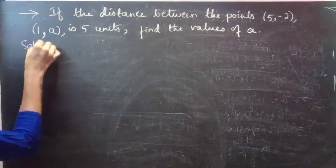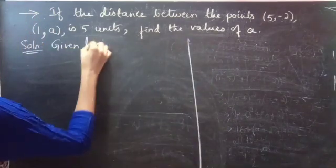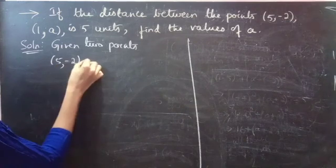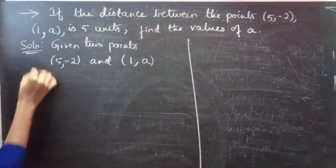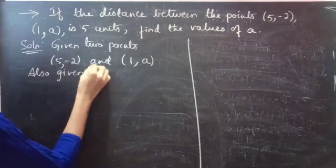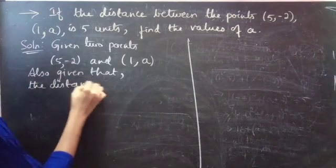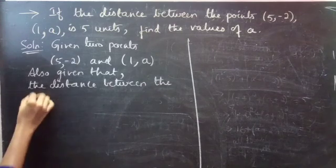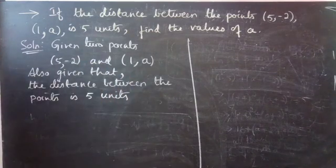Solution. Given 2 points: 5 comma minus 2, and 1 comma A. Also given that the distance between the points is 5 units.